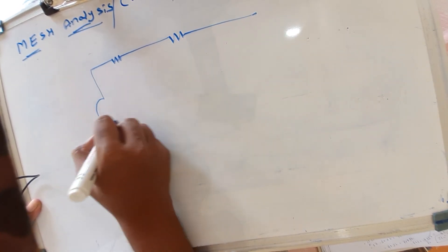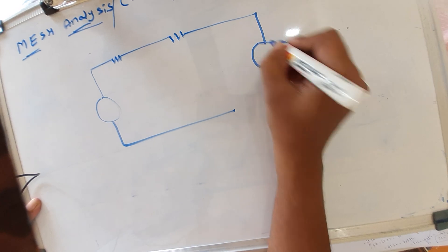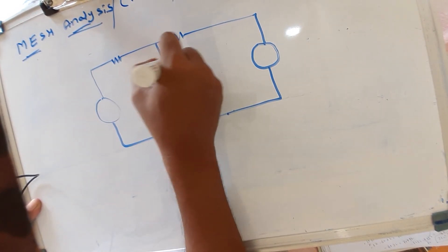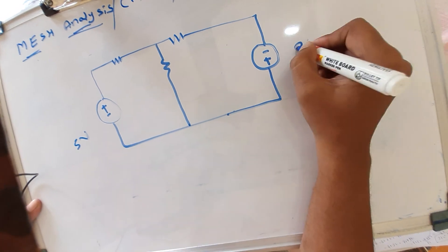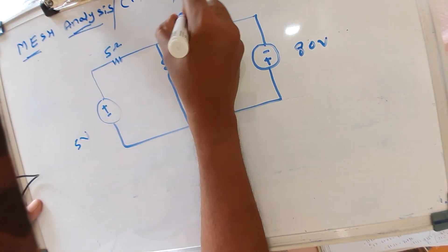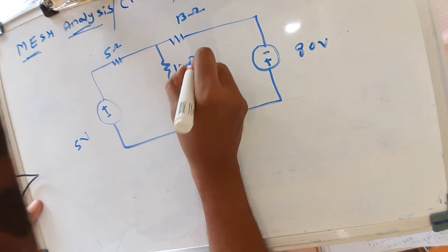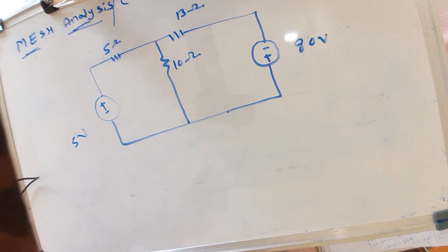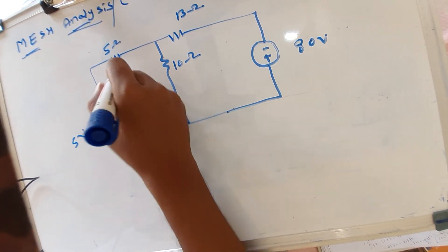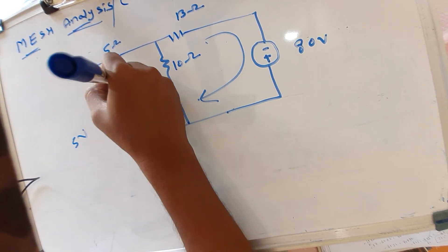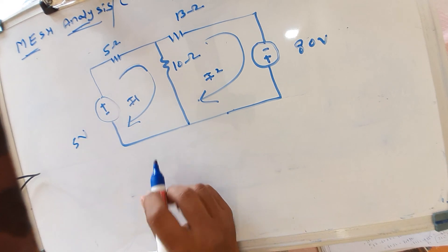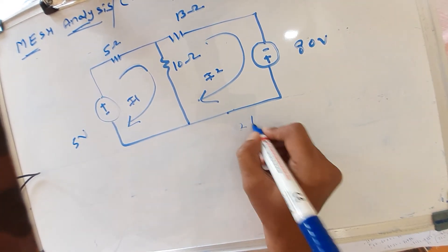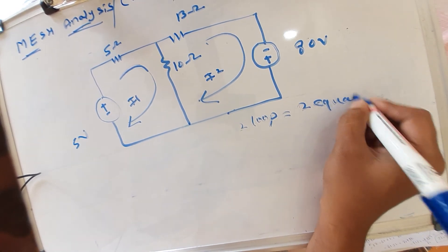Now consider the example circuit with V1 and V2 as voltage sources, and resistances of 5 ohm, 30 ohm, and 10 ohm. First, identify the number of loops — there are two loops. Assign I1 to the first loop and I2 to the second loop. Two loops means two equations.